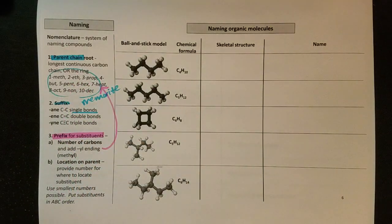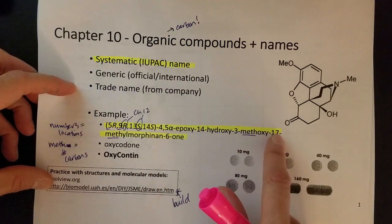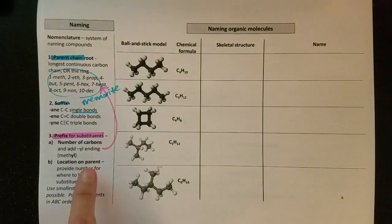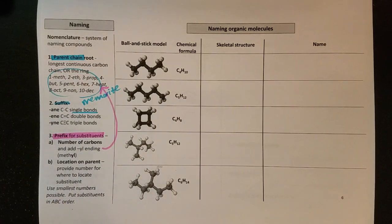With that number of carbons we're going to use these same roots here. We'll also see the location on the parent chain, which we saw some of back in this oxycontin. All these different numbers told me where to locate things on this structure. We always want to use the smallest numbers possible and alphabetize our substituents.